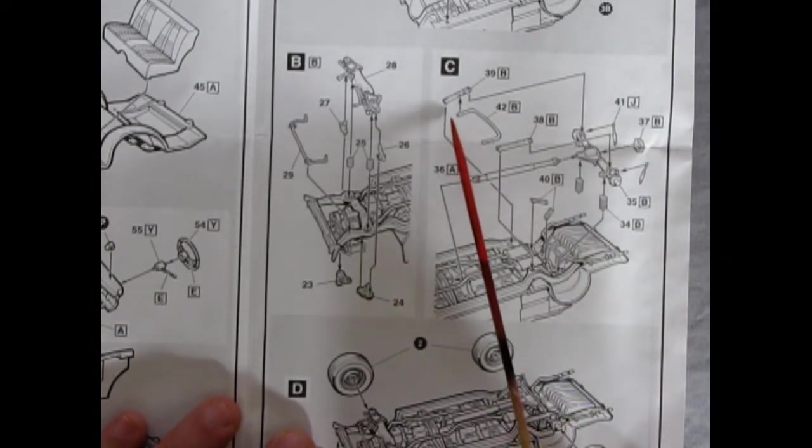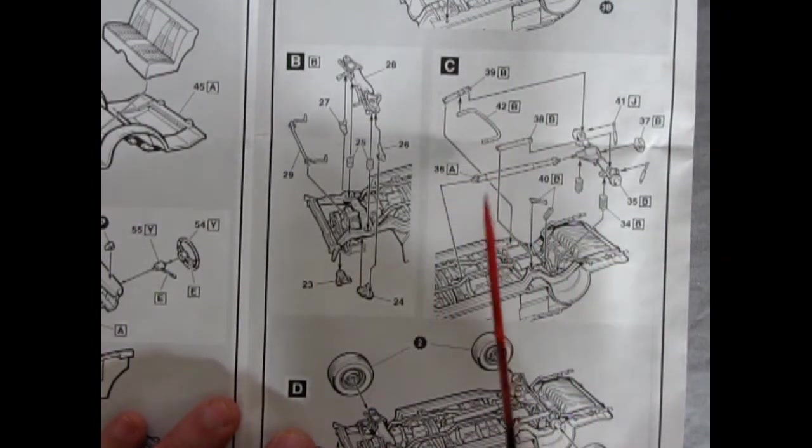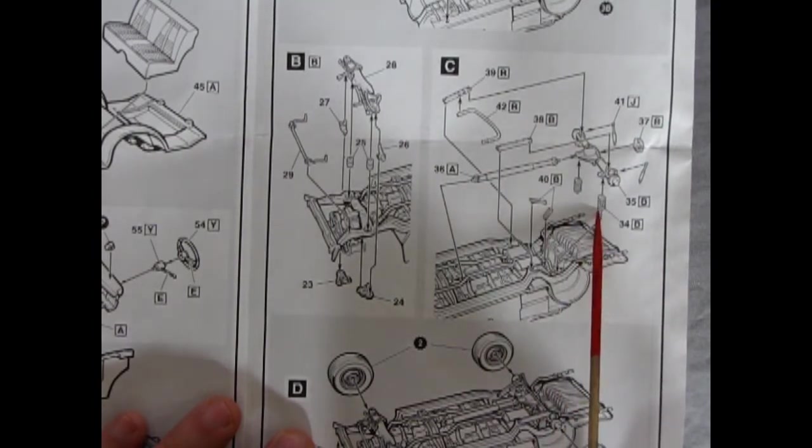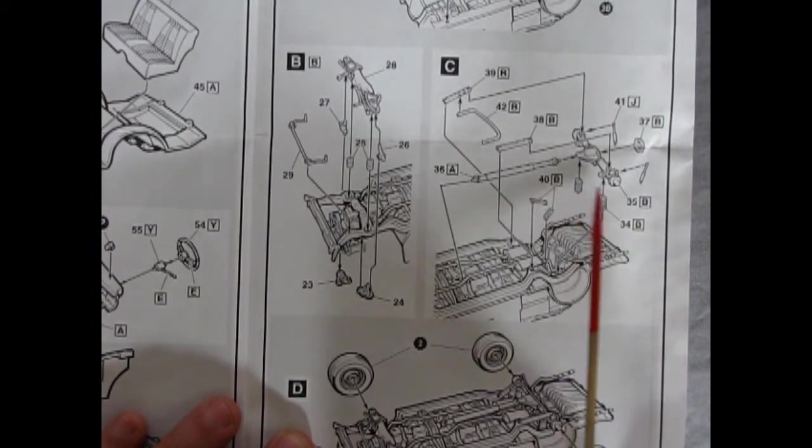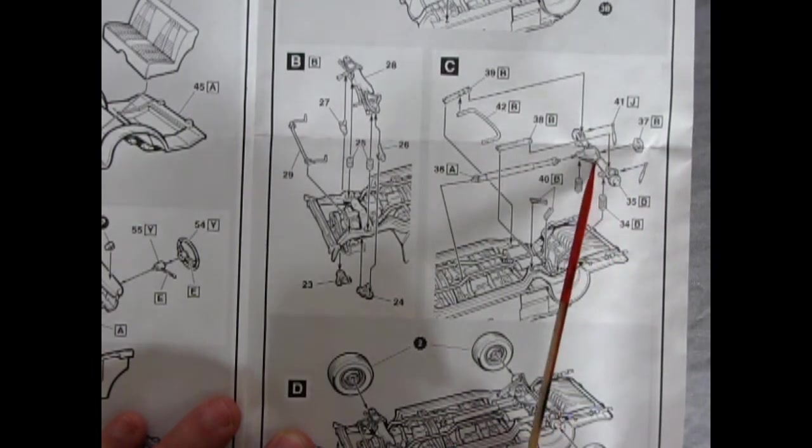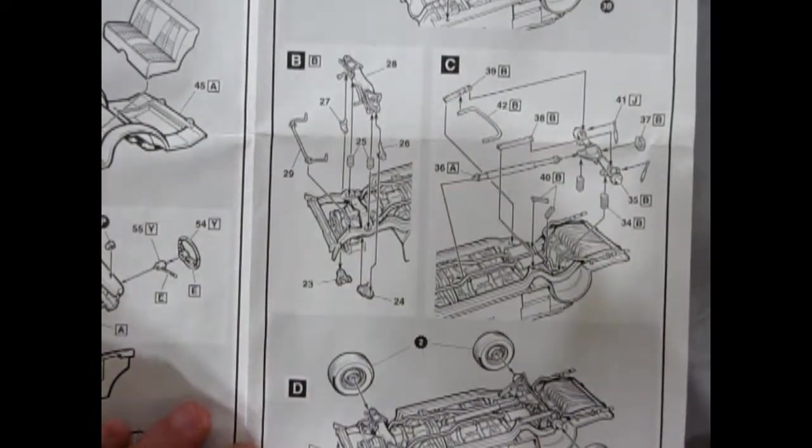Going into the back. We have struts and stabilizers. The differential. The little substruts in here. Rear coil springs. Nice differential on there. Shock absorbers. Differential cover to the back. Very well done.